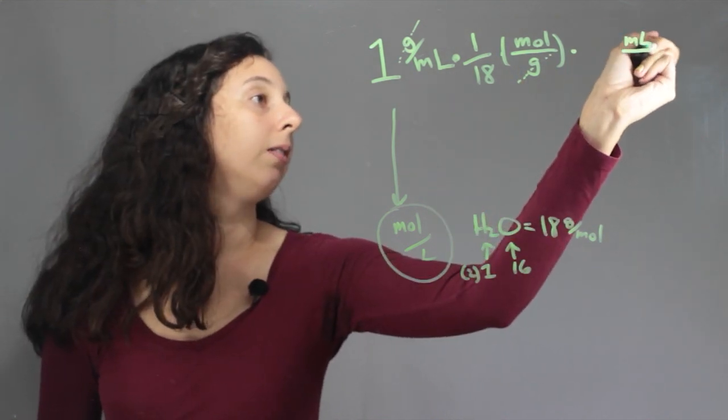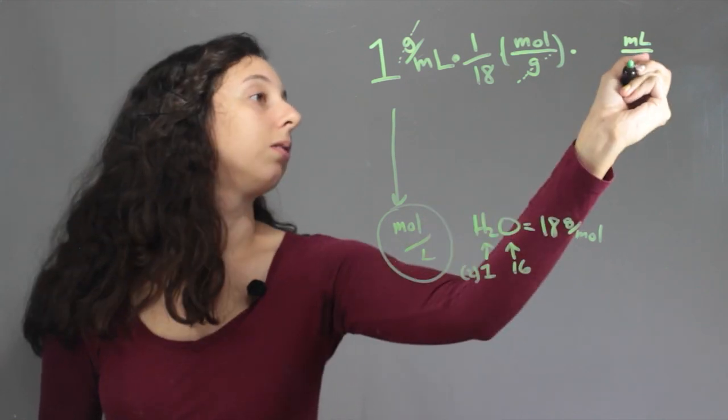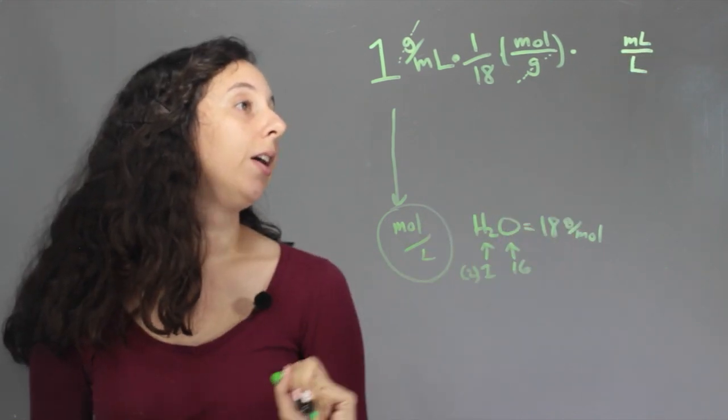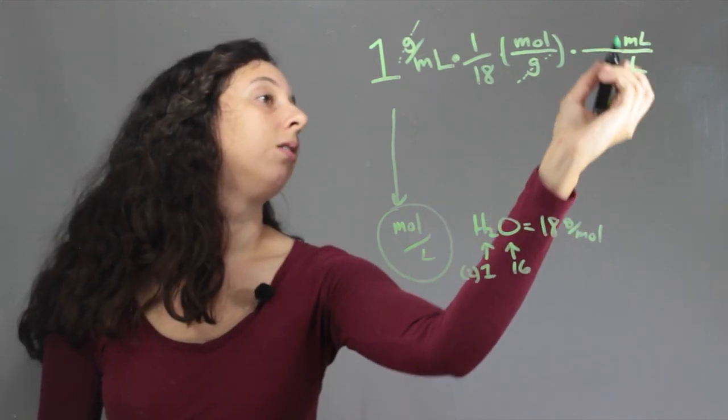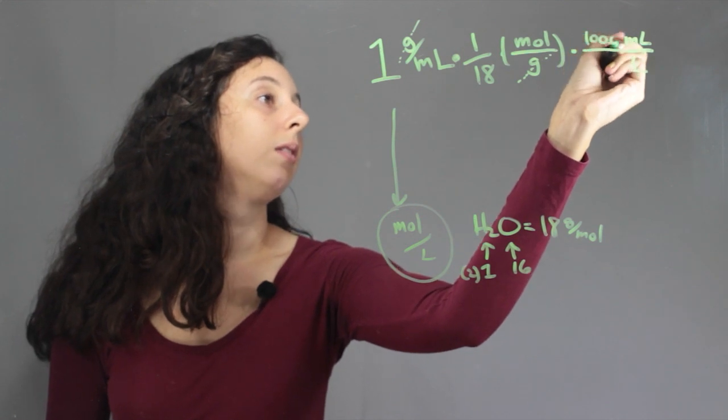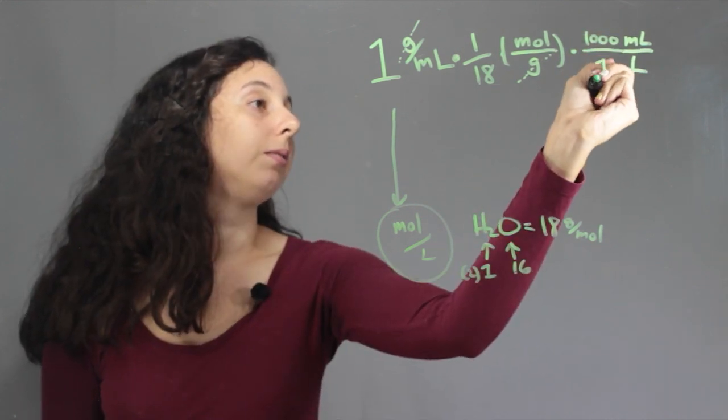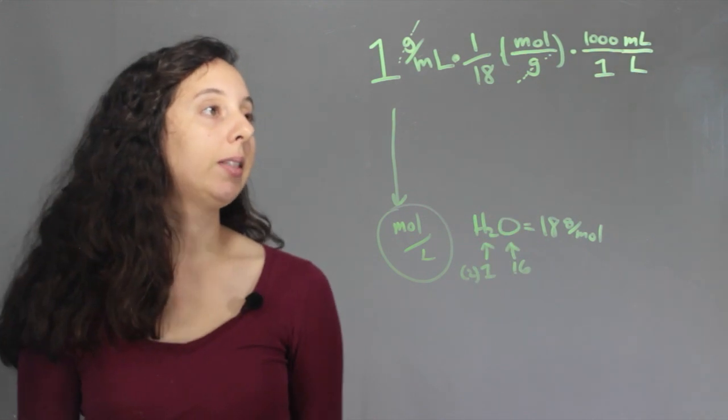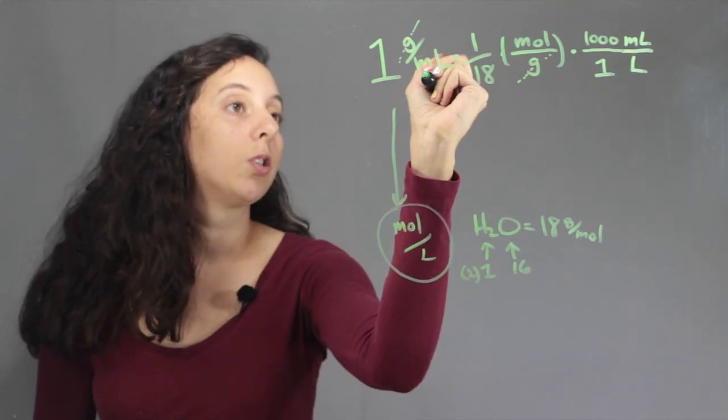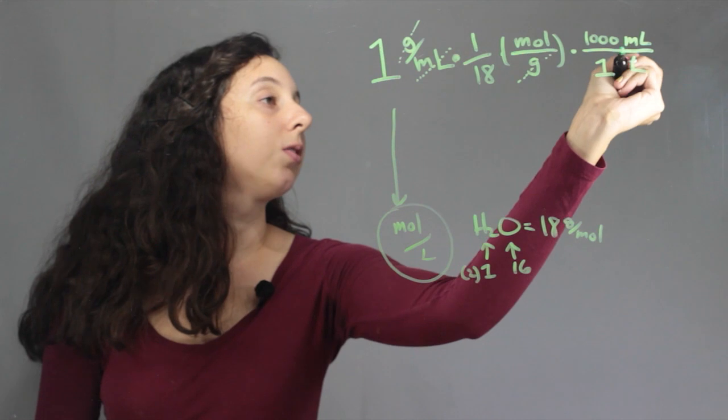So milliliters here to turn into liters, what we want at the end of the day. And so every 1000 milliliters equals one liter. And now we can see that these units will cancel out and so will these.